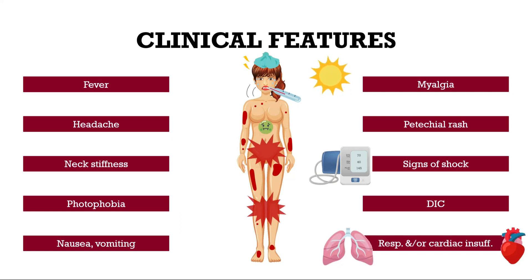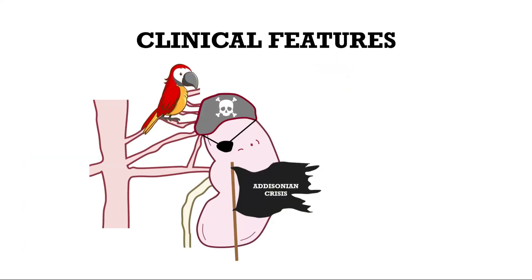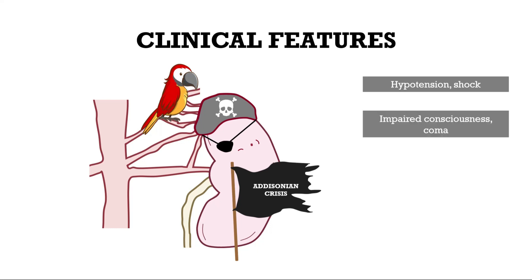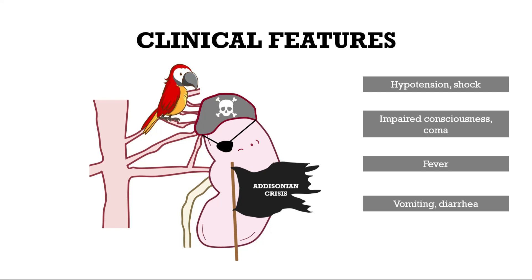The Addisonian crisis, also called adrenal crisis, comprises hypotension and even shock, impaired consciousness and coma, fever, vomiting, diarrhea, severe abdominal pain, and others as signs and symptoms.